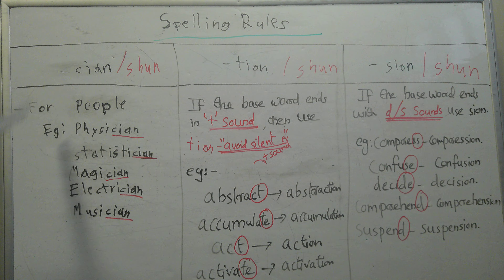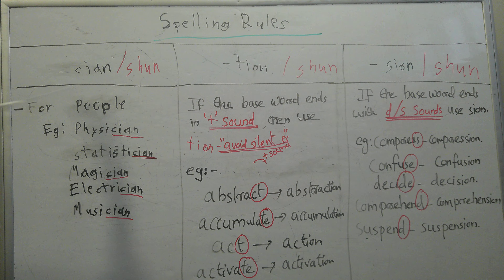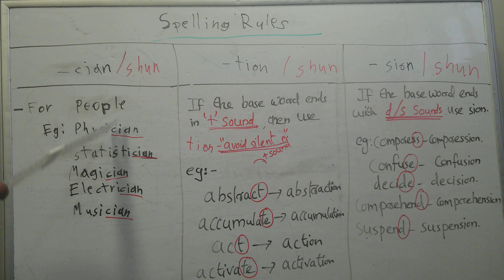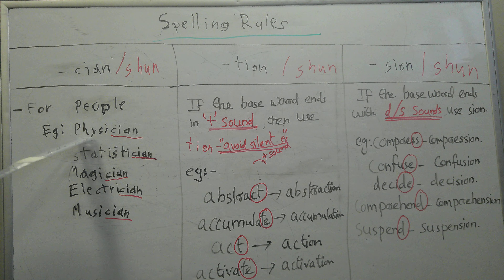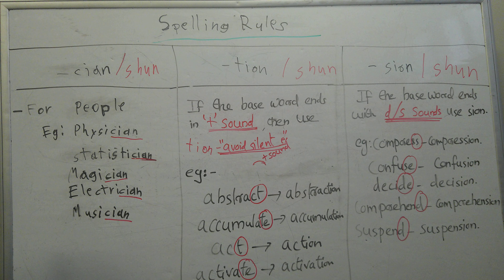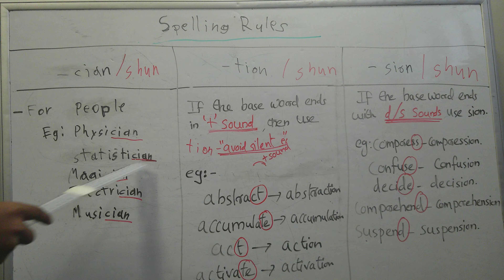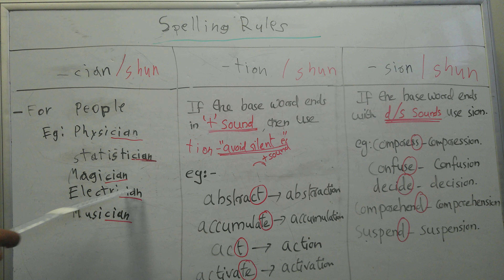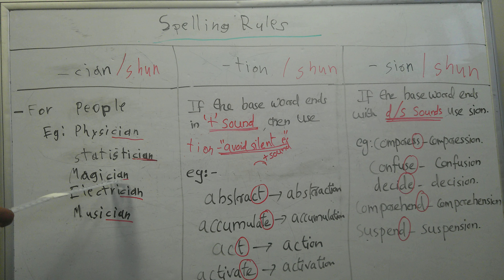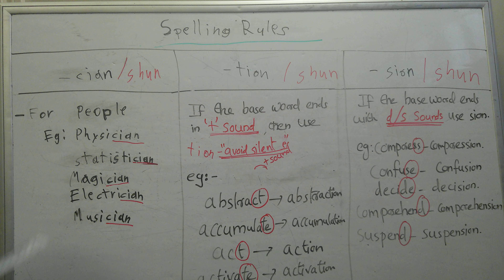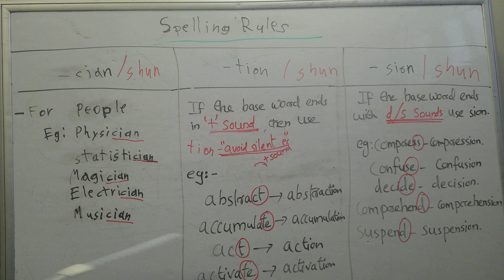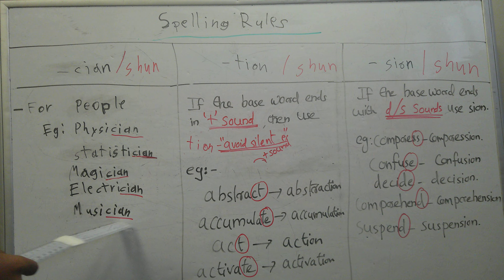For C-I-A-N, we use it for people. For example, 'physician' has C-I-A-N and it's a person. 'Statistician' is a person and has C-I-A-N. 'Magician' is a person and has C-I-A-N at the end. 'Electrician' has C-I-A-N at the end and it's a person. 'Musician' has C-I-A-N at the end and it's also a person.